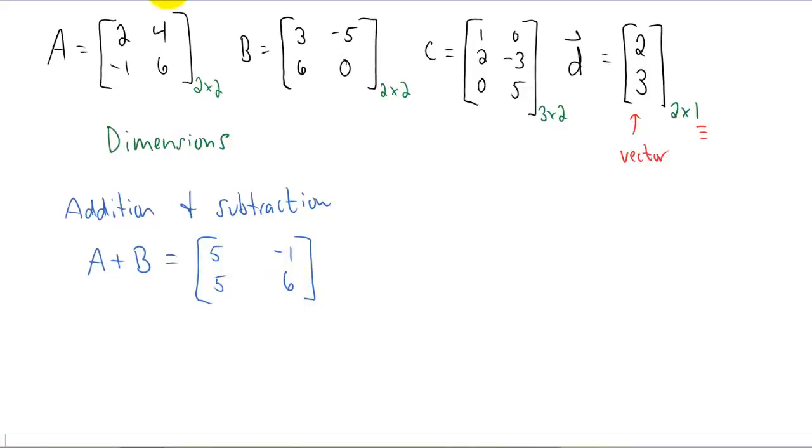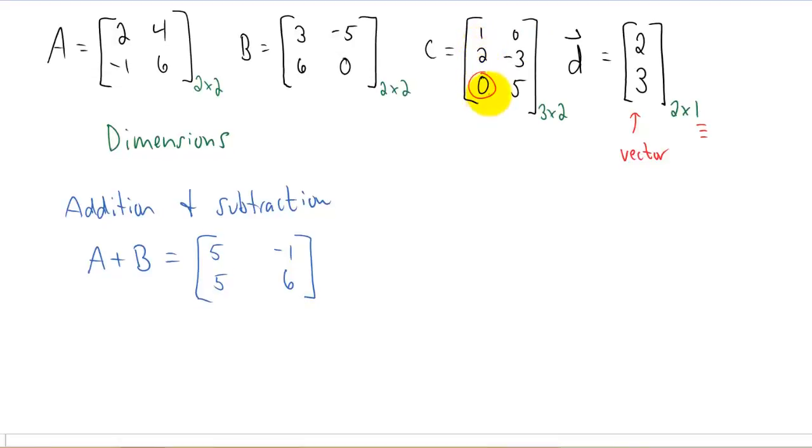And there I went using a vocabulary word. Each number inside of a matrix is called an element. This element right here would be called element 3, 1. And it's typically denoted with a lowercase letter and the two numbers as a subscript.